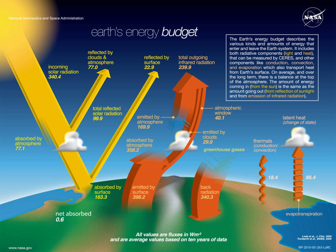The total amount of energy received per second at the top of Earth's atmosphere is measured in watts and is given by the solar constant times the cross-sectional area of the Earth. Because the surface area of a sphere is 4 times the cross-sectional surface area, the average top-of-atmosphere flux is one quarter of the solar constant, approximately 340 W per square meter. An average of approximately 77 W per square meter is reflected back to space by clouds and the atmosphere, and approximately 23 W per square meter is reflected by surface albedo, leaving approximately 240 W per square meter of solar energy input to Earth's energy budget. This gives the Earth a mean net albedo of 0.29.